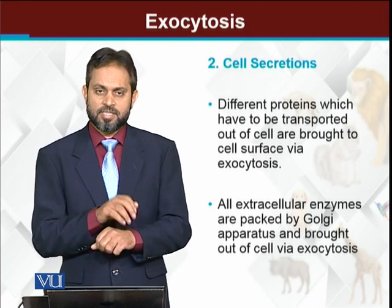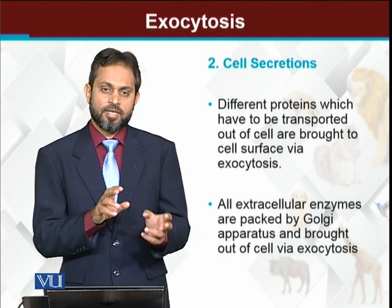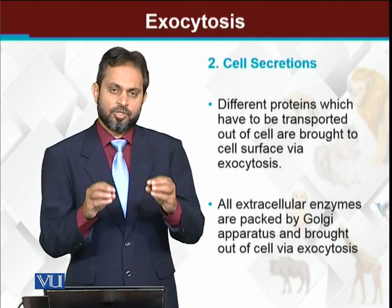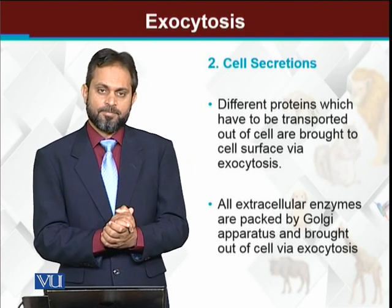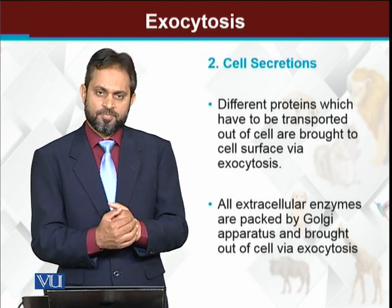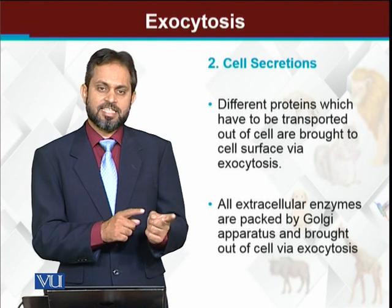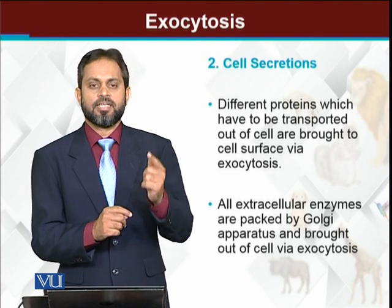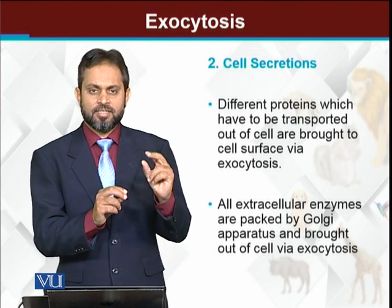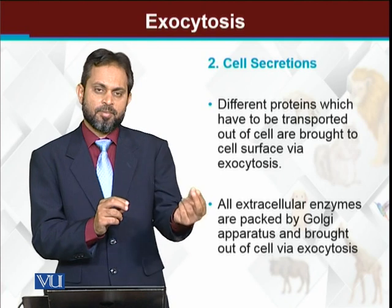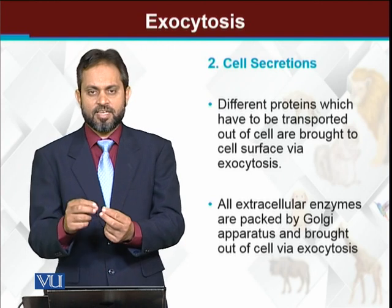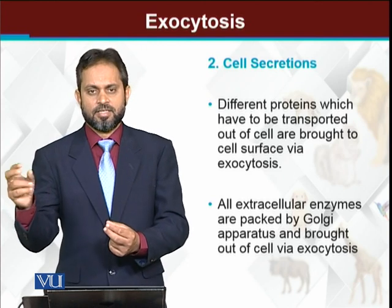Another example of useful substances: proteins that need to become part of the cell membrane. All proteins are synthesized by ribosomes in the cytoplasm. Proteins that need to exit the cell are always synthesized on the endoplasmic reticulum. After synthesis in the ER, they are packed into a vesicle and sent to the Golgi apparatus, which further modifies them and sends them toward the cell membrane.